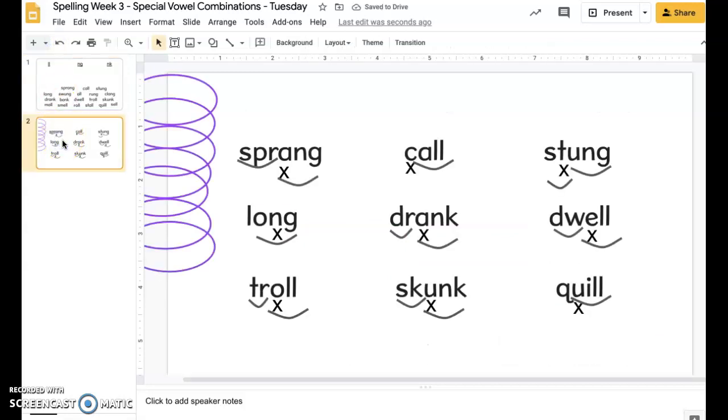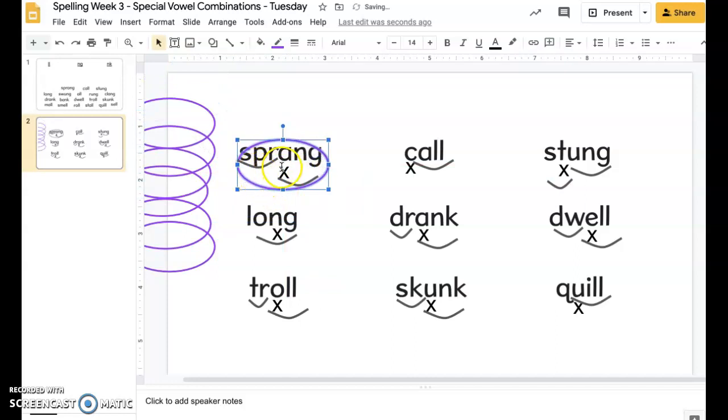Screen two is you are going to circle the ones that have the correct markings. So, this one is showing the blend marking and then it's showing the special vowel combination marking. This one's not correct because it should be a special vowel combination, so the vowel should be marked with the arc underneath it. This one's also not correct because even though the blend has the arc and the special vowel combination has the arc, the vowel isn't marked in the right place.